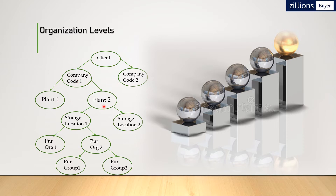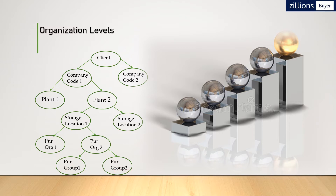After the client and company codes, each company code has plants. For example, company code 1 has plant 1 and plant 2. Each plant can have different storage locations — for example, plant 1 and plant 2 each have two storage locations. After the tree diagram of plants and storage locations, we have purchase organizations — purchase organization 1 and purchase organization 2 — and then purchase groups: purchase group 1 and purchase group 2. This is our complete organization level structure.